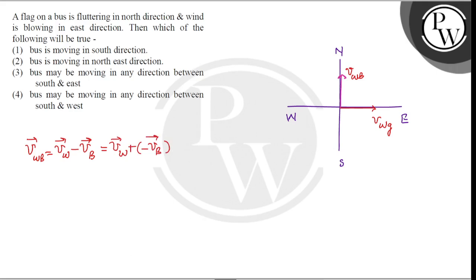So clearly negative of velocity of bus must be in this direction somewhere. So minus VB is coming, which gives VB in this direction.